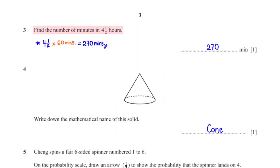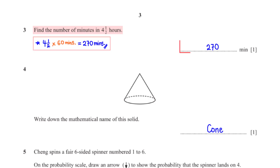Find the number of 4.5 minutes in 4 and a half hours. 1 hour is 60 minutes. So to convert 4 and a half hours to minutes, we multiply 4 and a half by 60. This gives us 270 minutes.